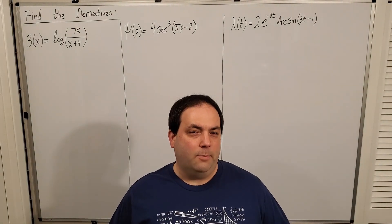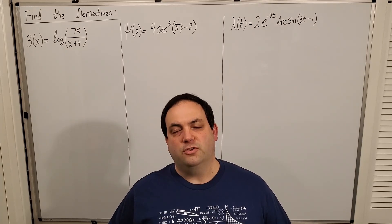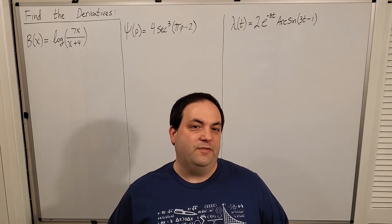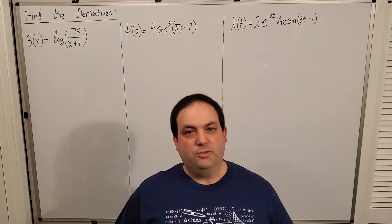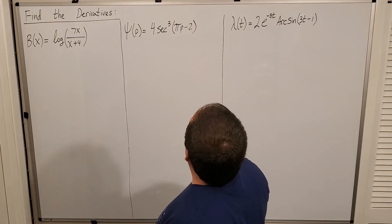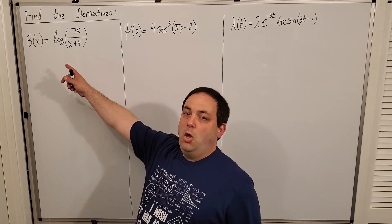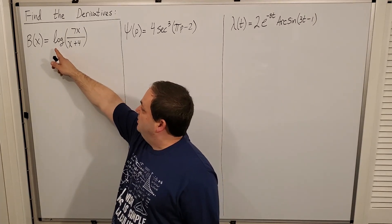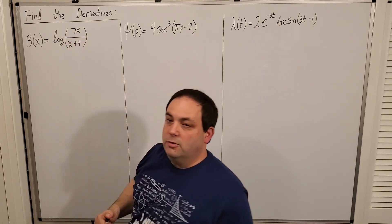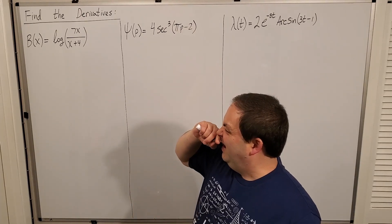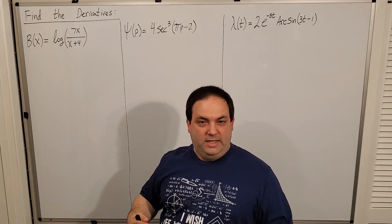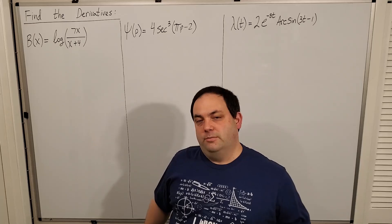Let's begin with some examples of using the derivative rules — the shortcut rules that allow us to efficiently find derivative functions of more complicated original functions. Find the derivative: b(x) equals log of 7x over x plus 4. And that's the log base 10, not the natural log — that's important, it's base 10, not base e. I'm going to work this one two different ways to show how you can get wrapped up in these structures and forget that algebra is sometimes your friend.